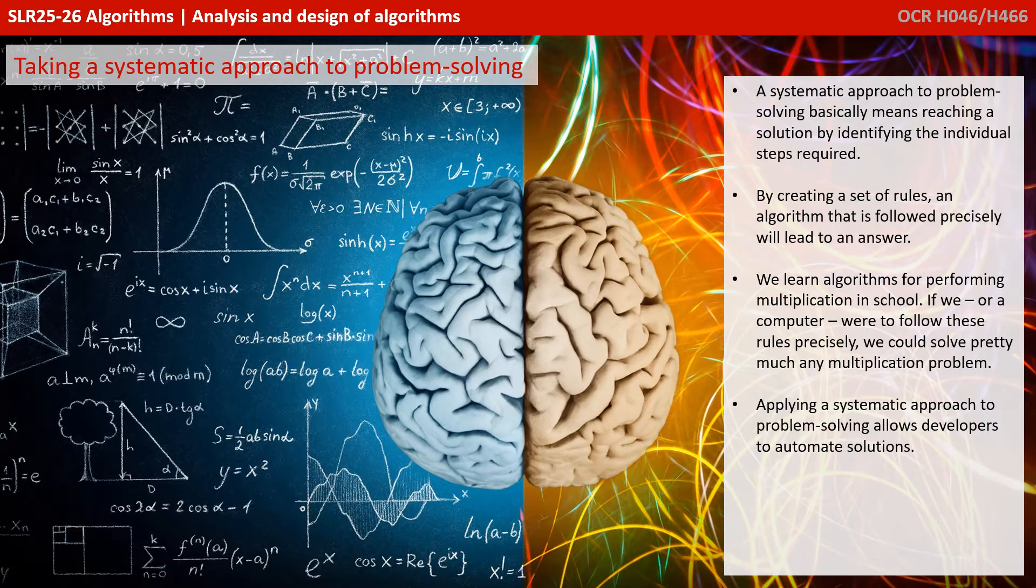By creating a set of rules, an algorithm that is followed precisely, we can get to an answer. Just as a simple example, you all learn algorithms for doing multiplication in school. If you or a computer follow these rules precisely, we can get to the answer for any multiplication problem. We simply apply the algorithm.